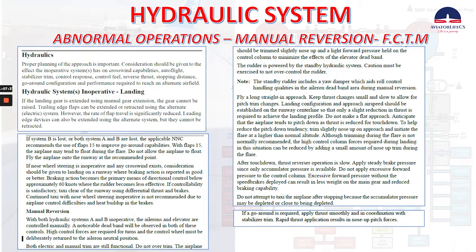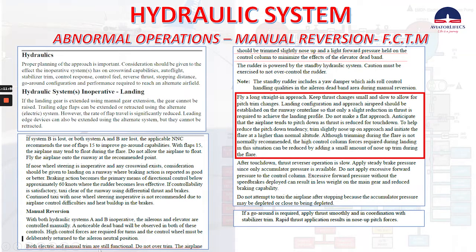If controllability is satisfactory, taxi clear of the runway using differential thrust and brakes. Continued taxi with nose wheel steering inoperative is not recommended due to airplane control difficulties and heat buildup in the brakes. With both hydraulic systems A and B inoperative, the ailerons and elevators are controlled manually. A noticeable dead band will be observed in both of these controls. High control forces are required for turns and the control wheel must be deliberately returned to the aileron neutral position. Both electric and manual trim are still functional — do not over trim. The airplane should be trimmed slightly nose up.